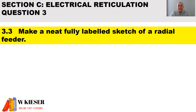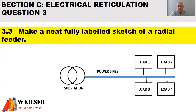The question asks for a fully labeled sketch of a radial feeder system. The radial feeder system is almost like a series system where there's only one power line. The advantages of this network are that it's simple, less cables are used, and less maintenance is required. The disadvantages are that it's not reliable — regions nearby get overloaded, and regions far away experience voltage drops. In the diagram, we have our substation, the power line, and then the loads drawing power from that power line.